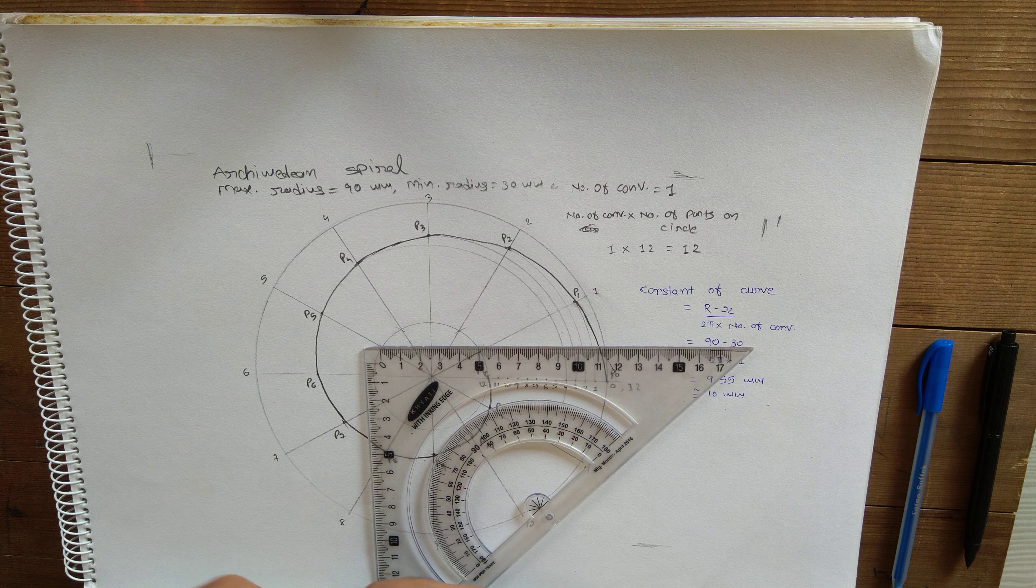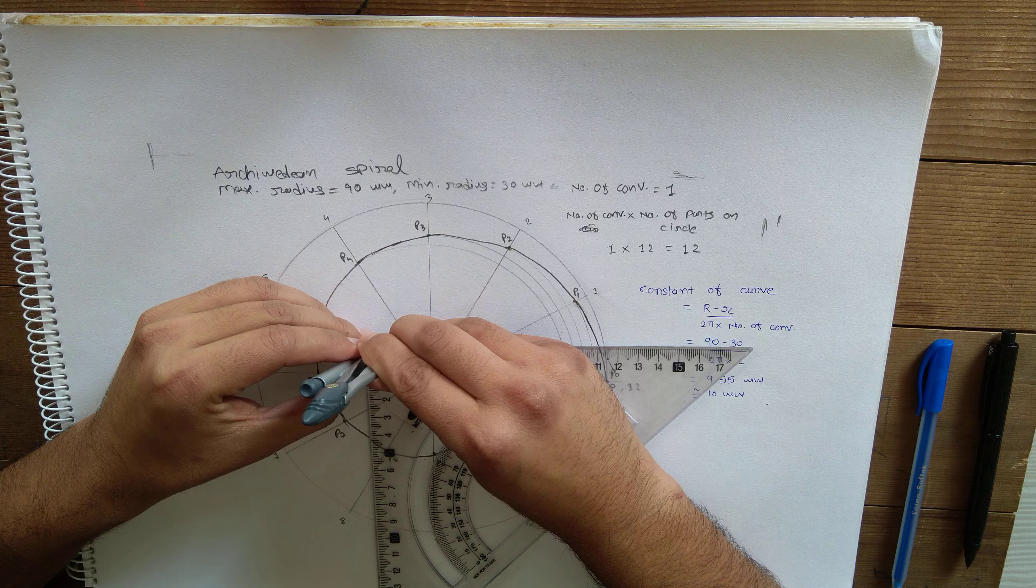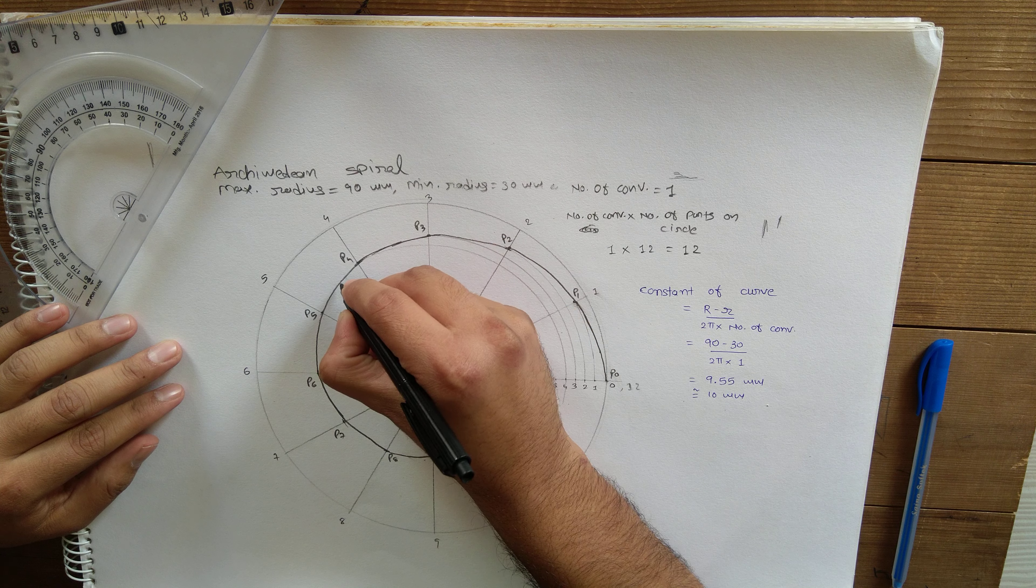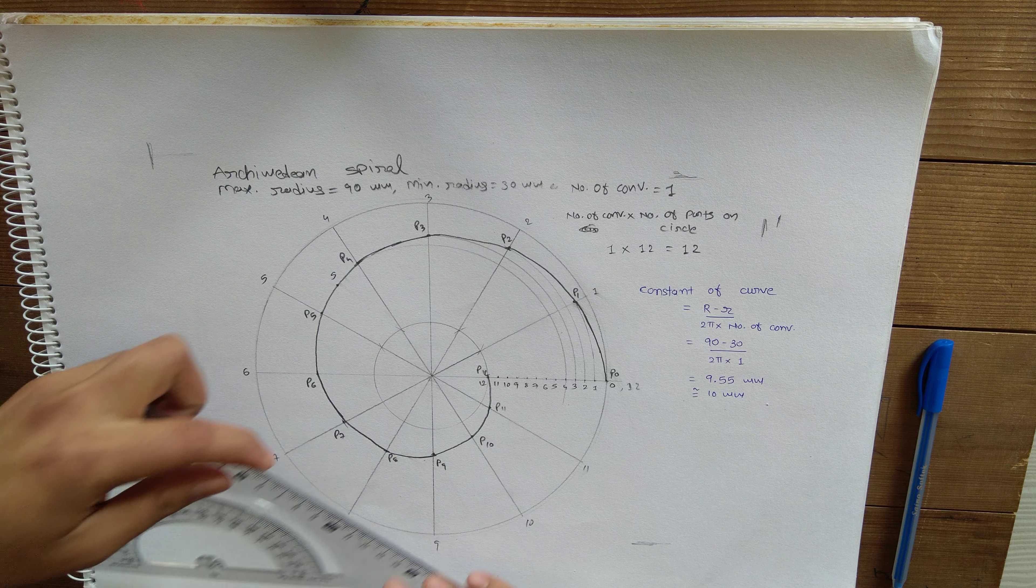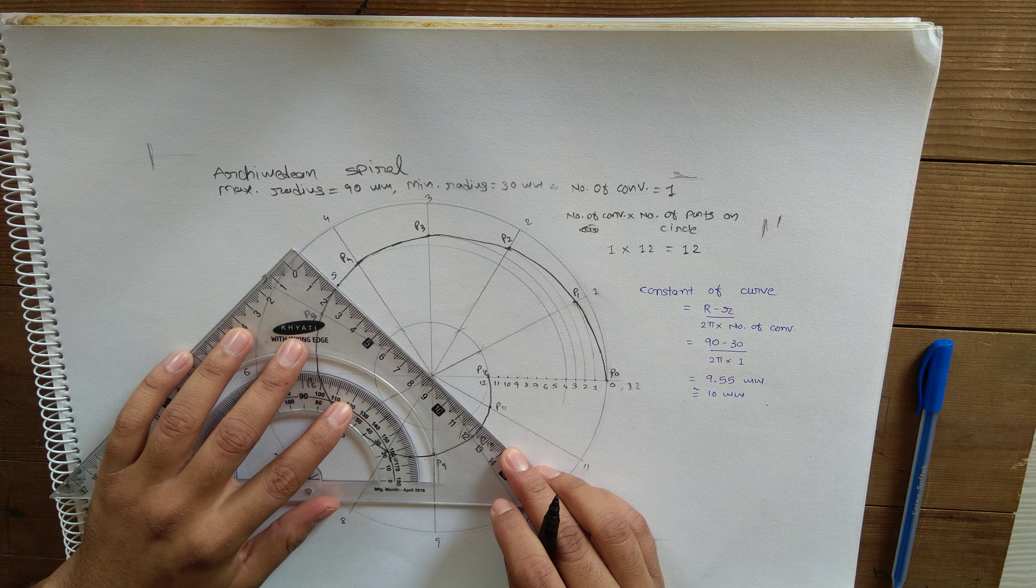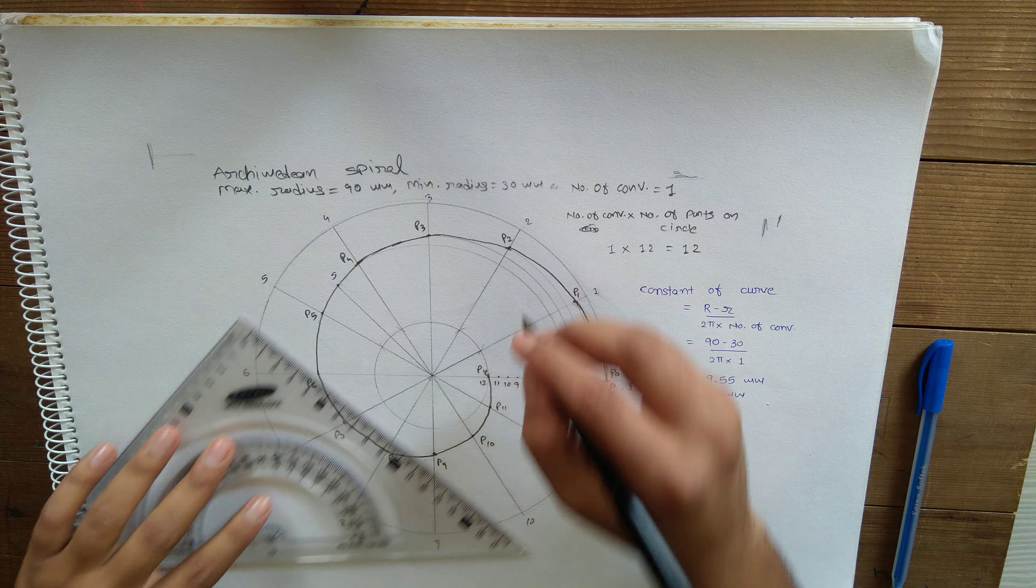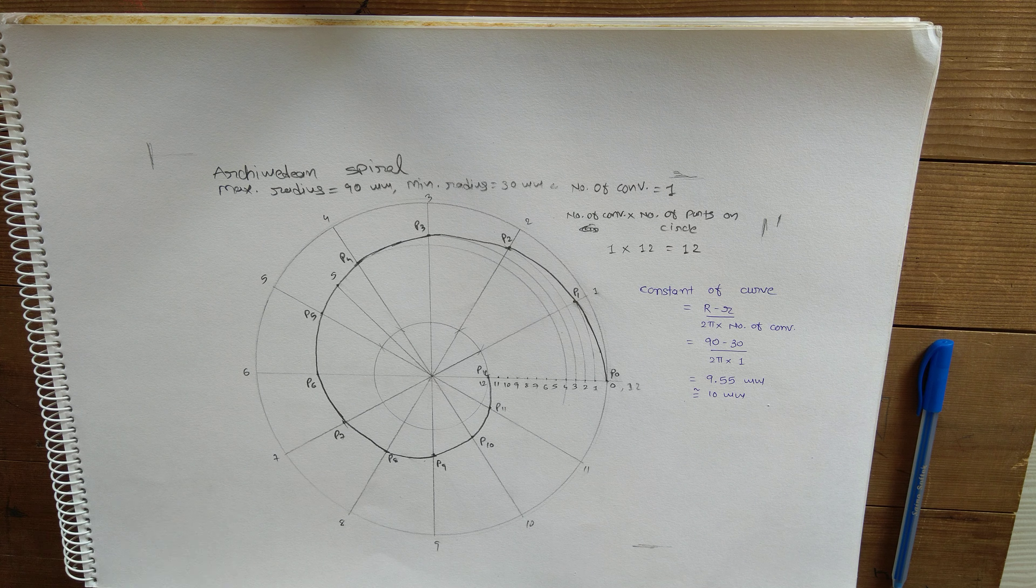Take this 10mm in the compass. Before that, let us first take any random point on this curve, then join this point with the center of the circle or pole of the spiral. Now draw a